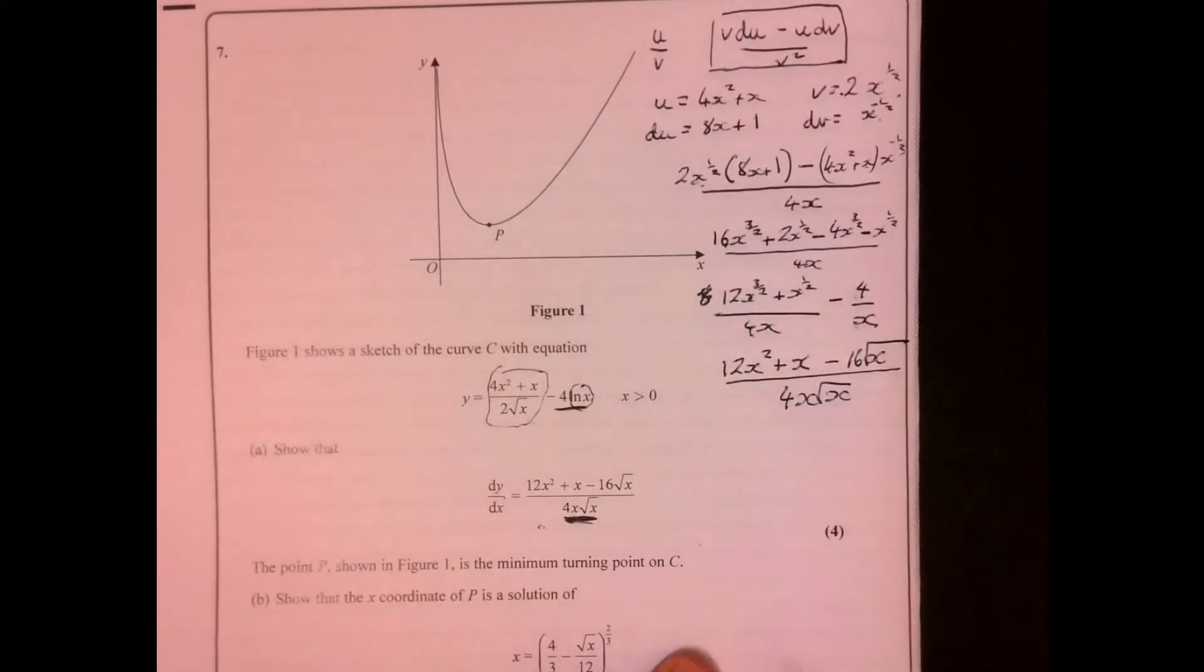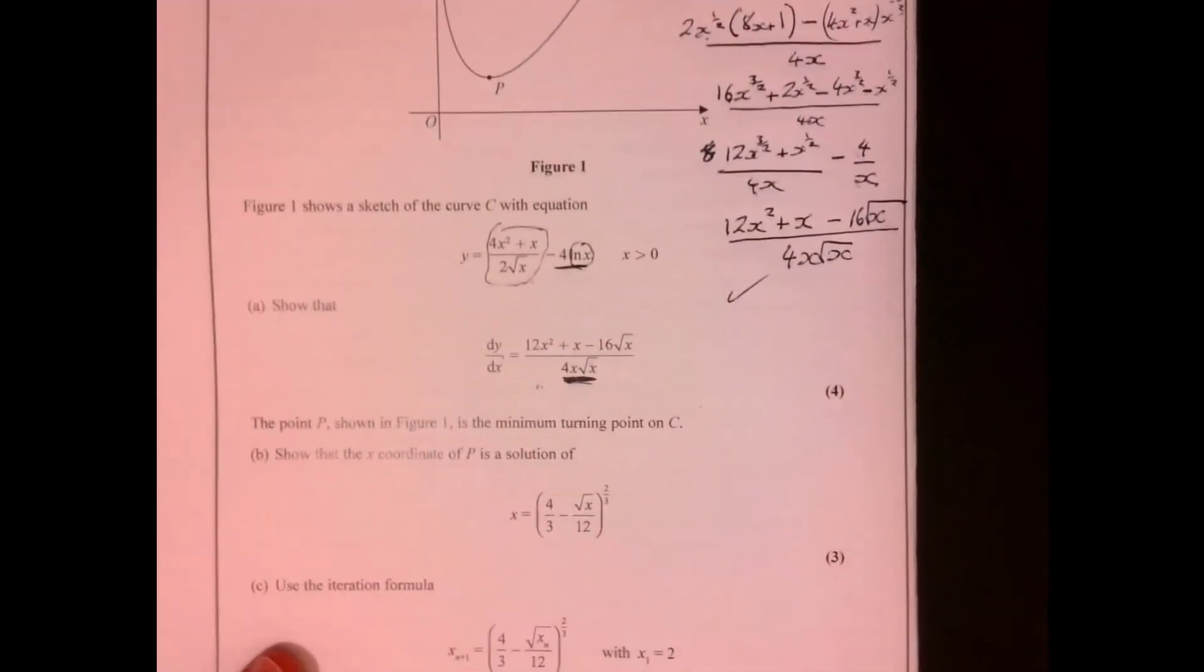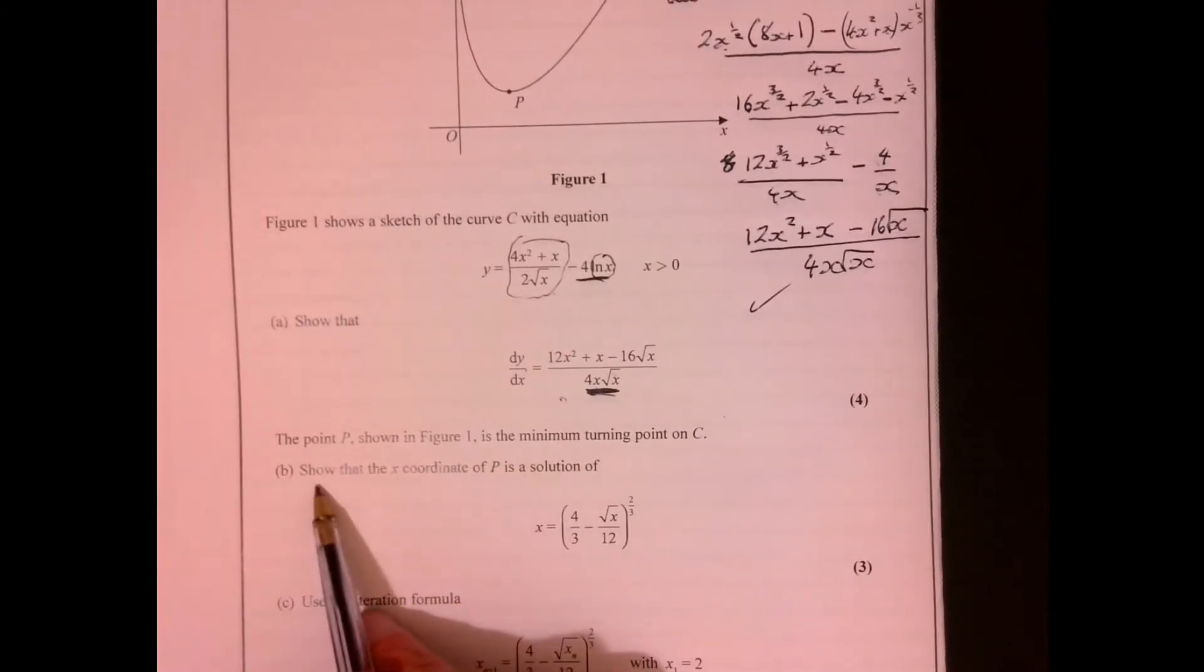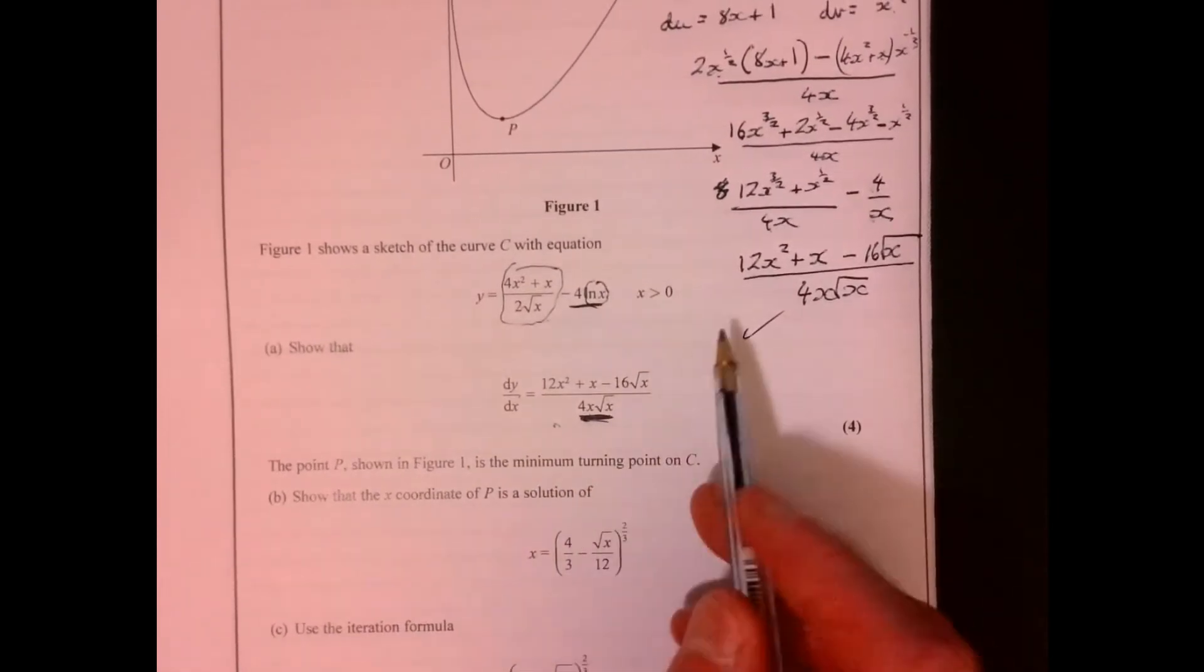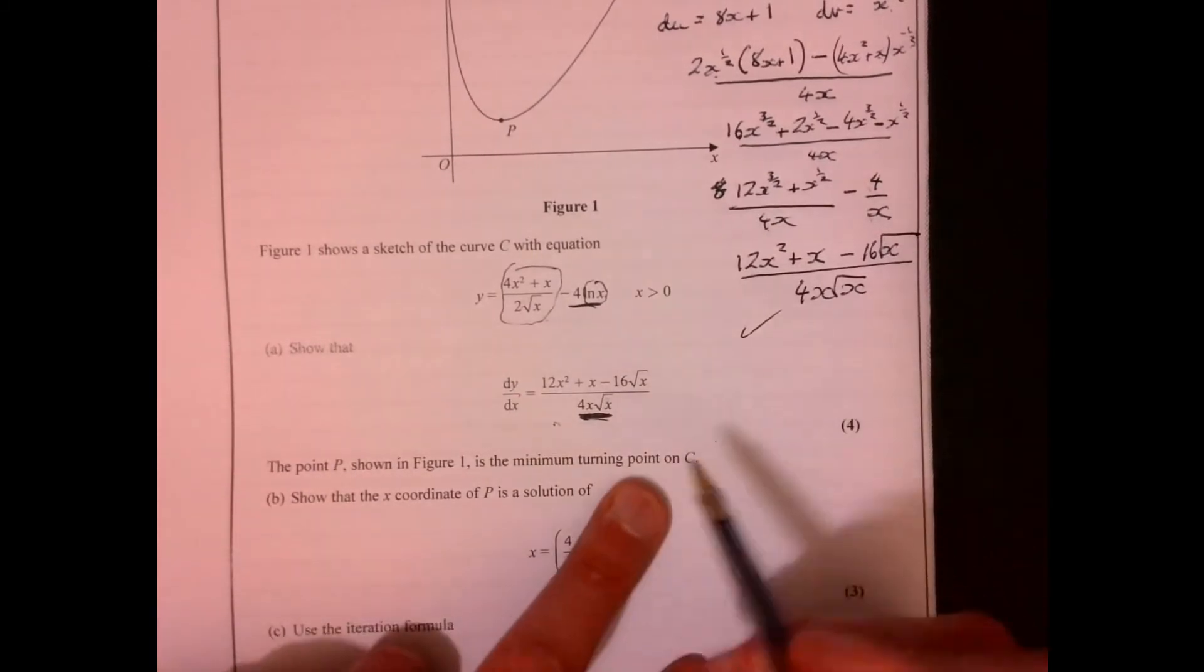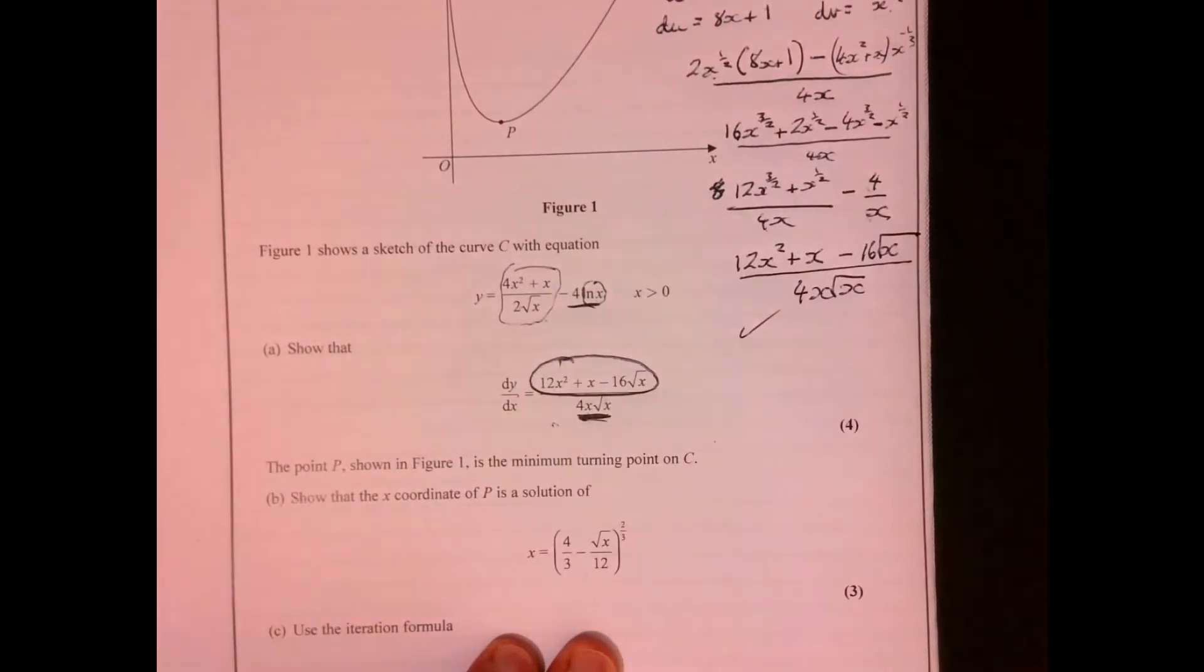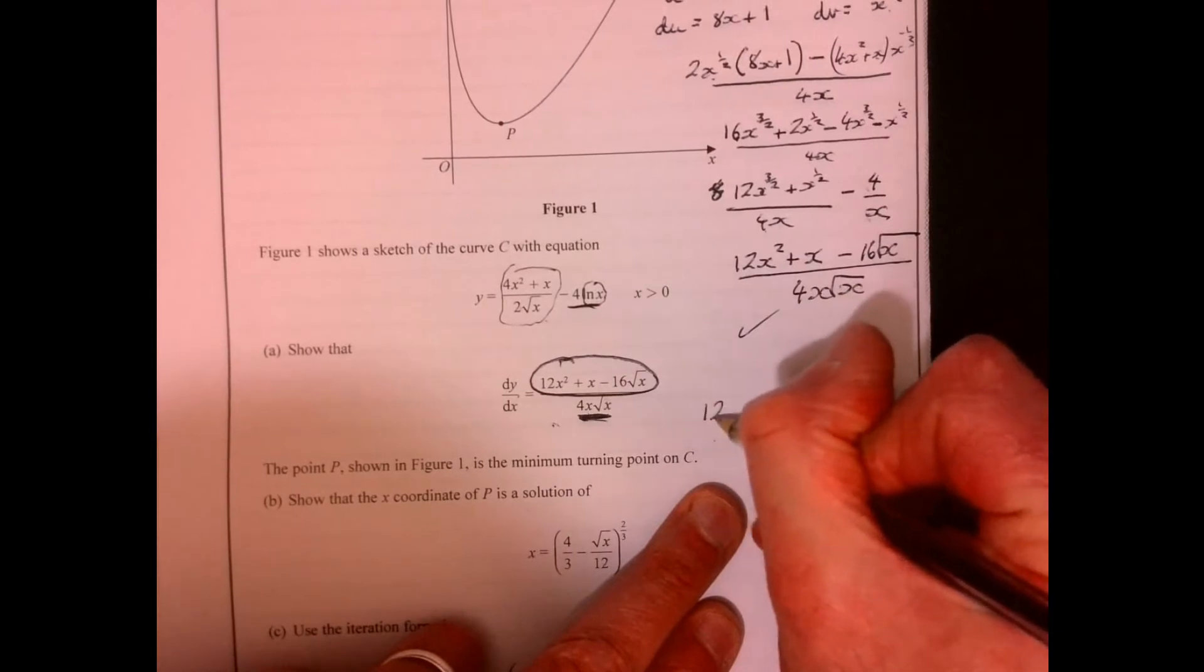So that's the first bit of the question. Now part B of the question. Let's have a look at this. We need to think about showing the minimum point. The minimum point is when dy/dx is equal to zero. When it's going to equal zero is when that bit there is going to be equal to zero.